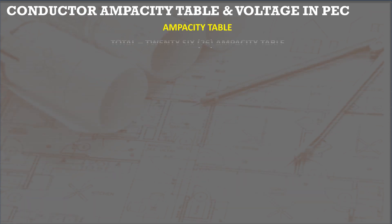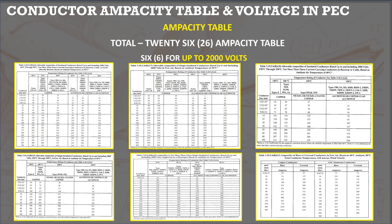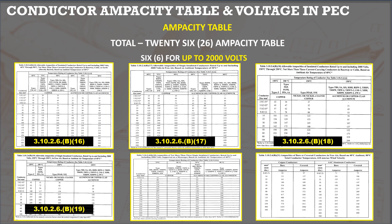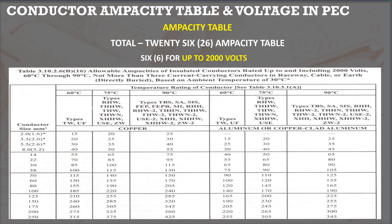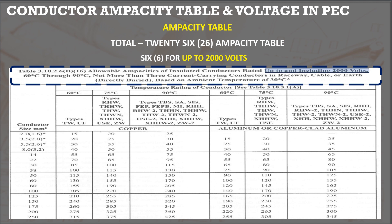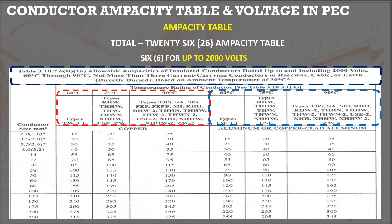There are more than 20 ampacity tables in the PEC. Six of them are for 0 to 2,000 volts, all in Table 3.10.2.6 B16 to B21. The top part of each table shows the method of installation or application, the voltage rating of 0 to 2,000 volts, insulation temperature rating, number of conductors in raceways, and installation method. The table is for an ambient temperature of 30 degrees Celsius. There are two types of conductors — copper and aluminum — and columns show ampacity depending on insulation type and material.